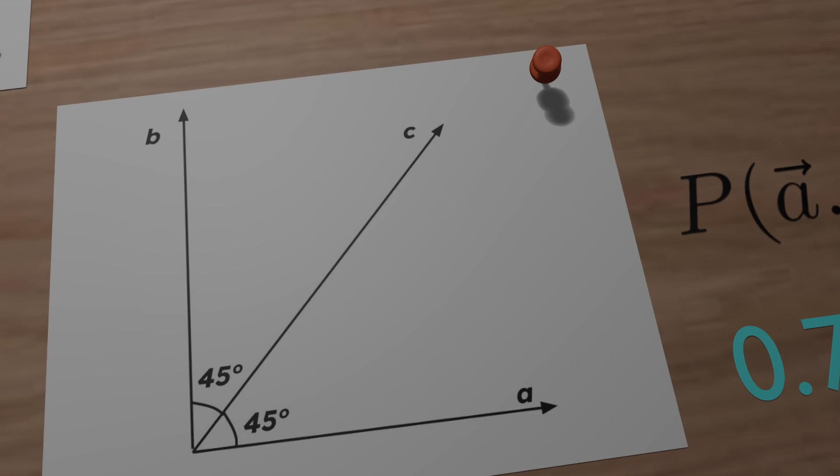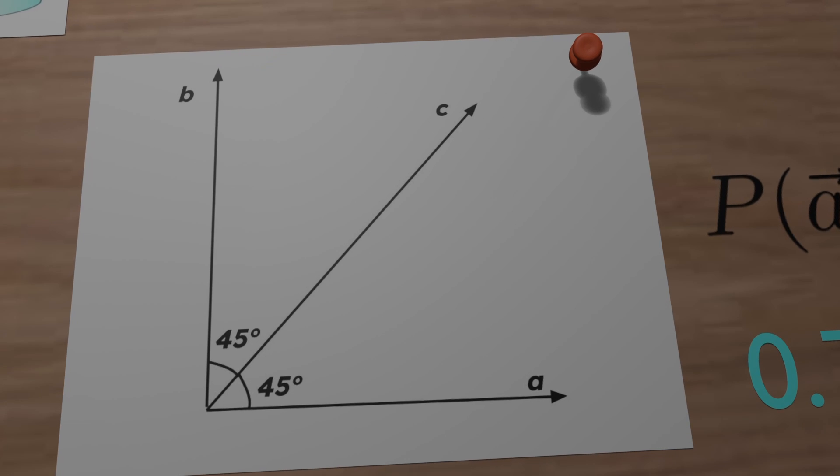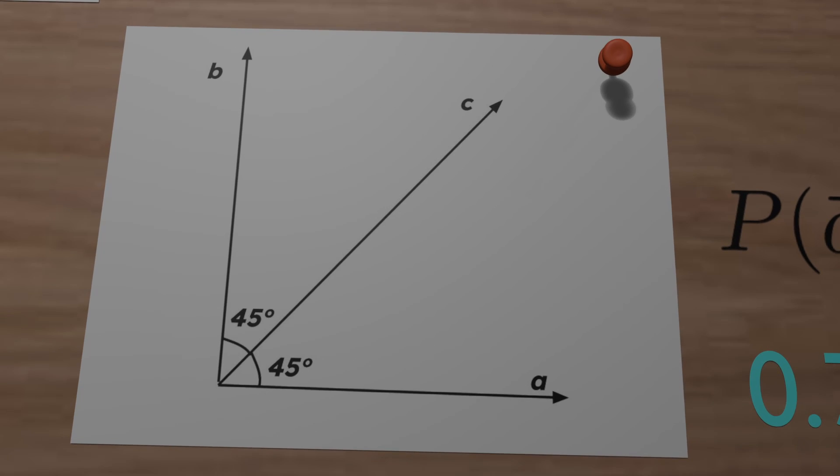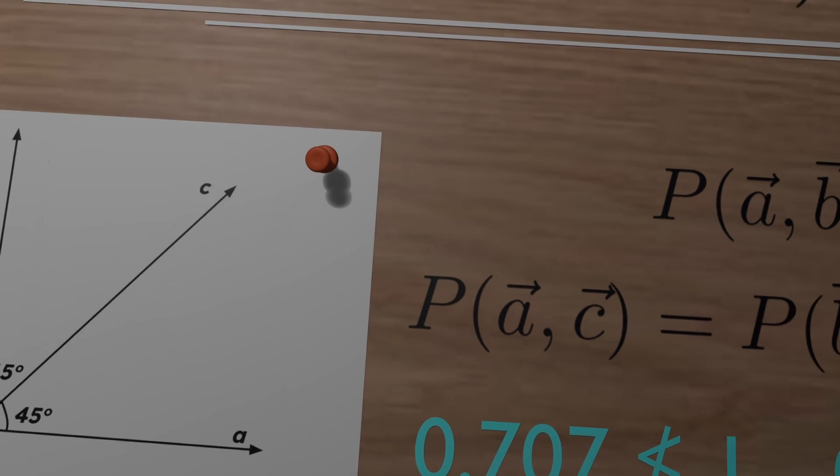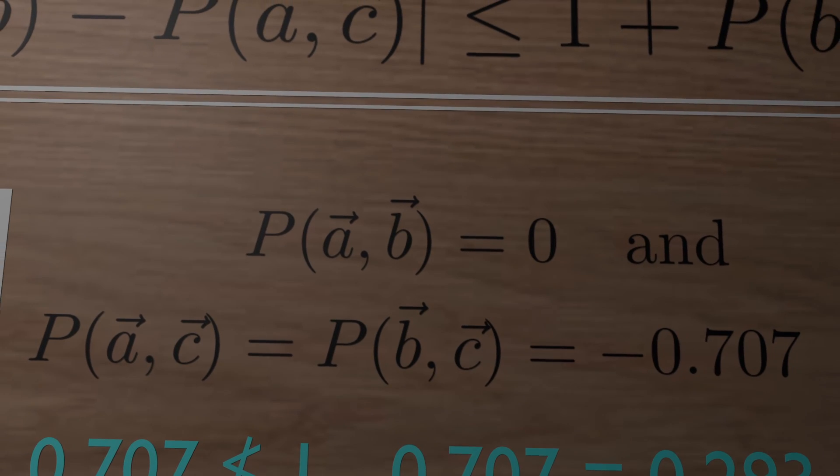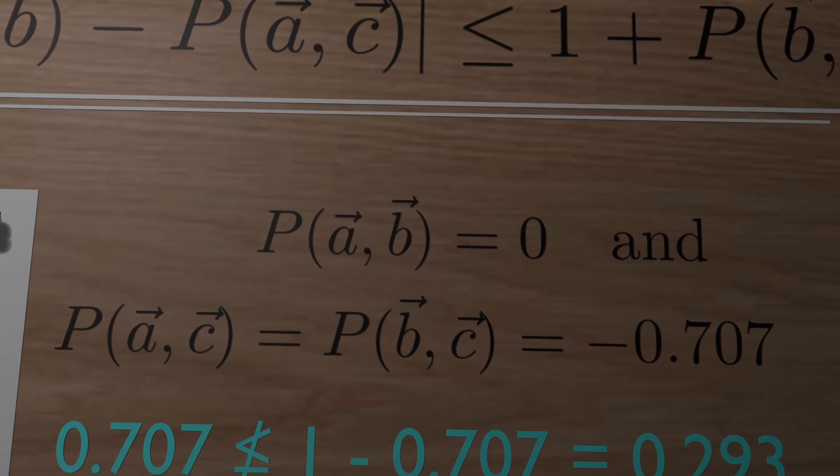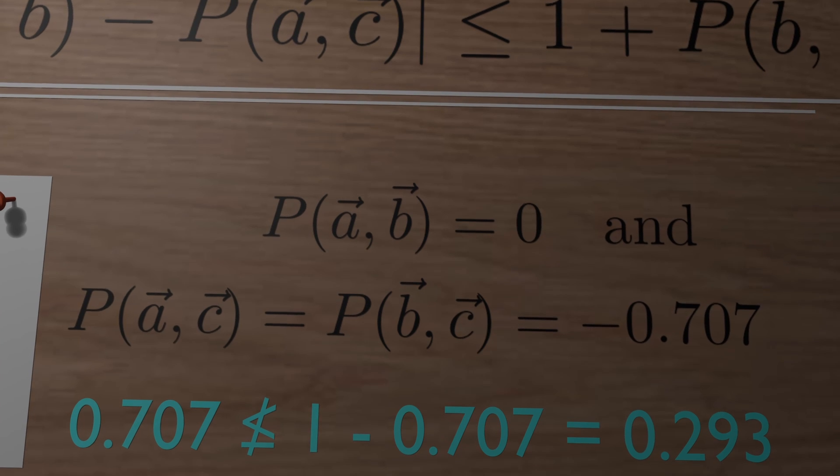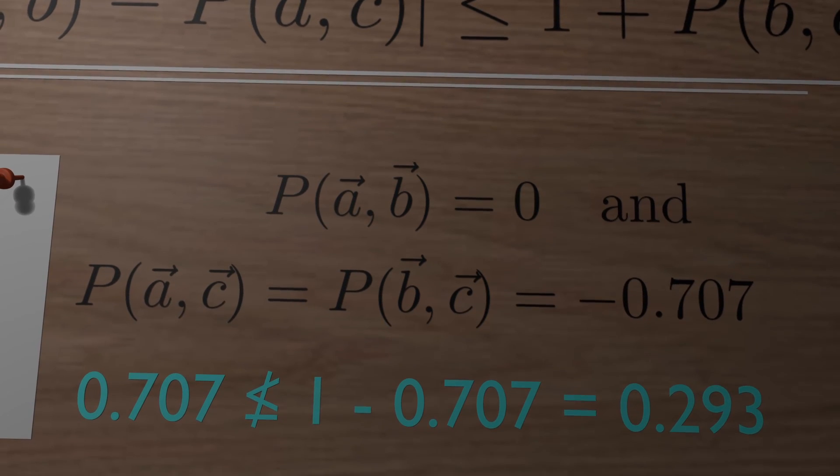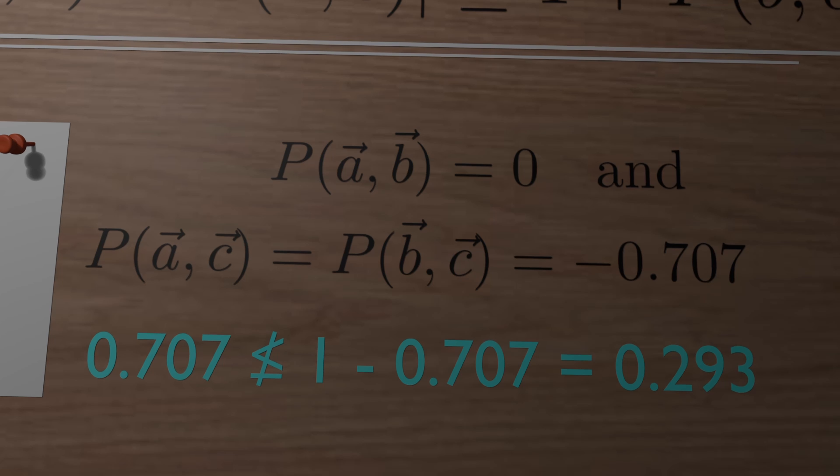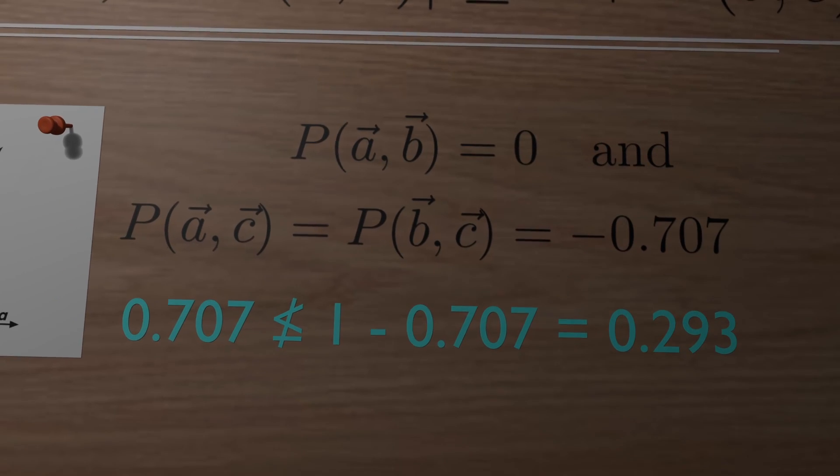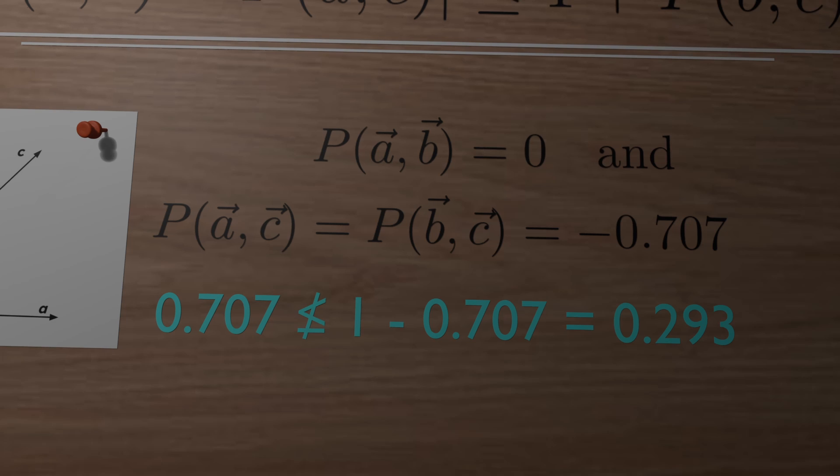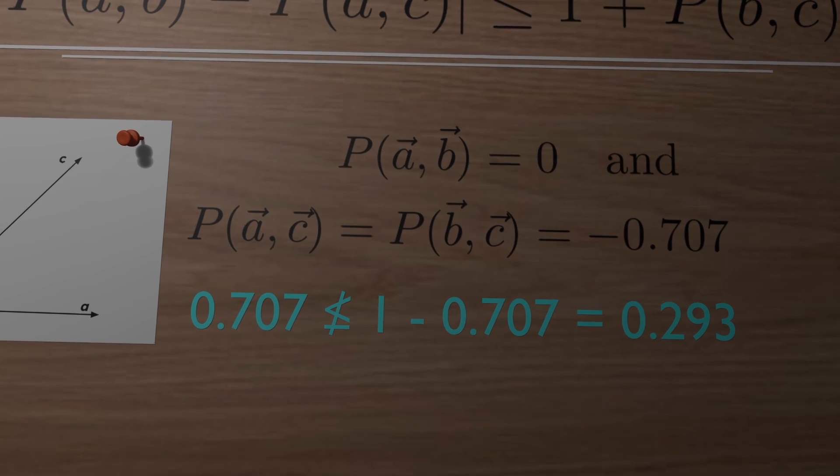Take the example when three unit vectors A, B and C lie in a plane forming 45 degrees. Quantum mechanics now predicts that P of AB is equal to 0 and P of AC is equal to P of BC, which is equal to minus 0.707. Now plugging this into Bell's inequality, we get that 0.707 should be less or equal to 1 minus 0.707, which is equal to 0.293, which is obviously a violation.